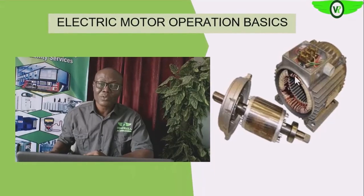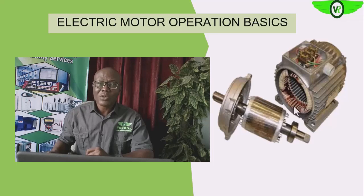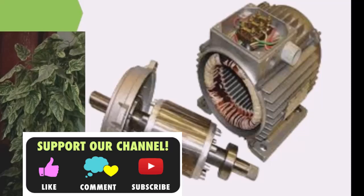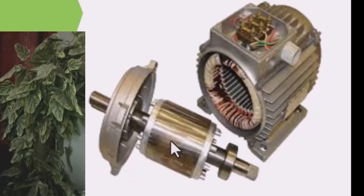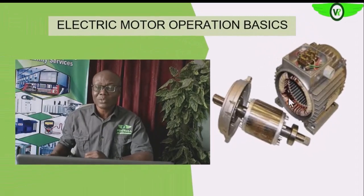If you look at your screen, you will see that the motor itself has two major components. We have the stator, on which we have the stator winding, and then we have the rotor, which is the rotating part of the electric motor, while the stator is the stationary part of the electric motor.